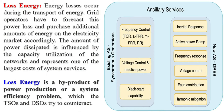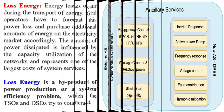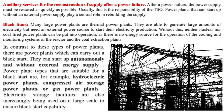Distributed Generation refers to the production of electricity by a variety of small, grid-connected devices known as Distributed Energy Resources (DER). These systems can include multiple generation and storage components and are often located close to the load they serve. They typically use renewable energy sources and can be more flexible and efficient than traditional power plants.